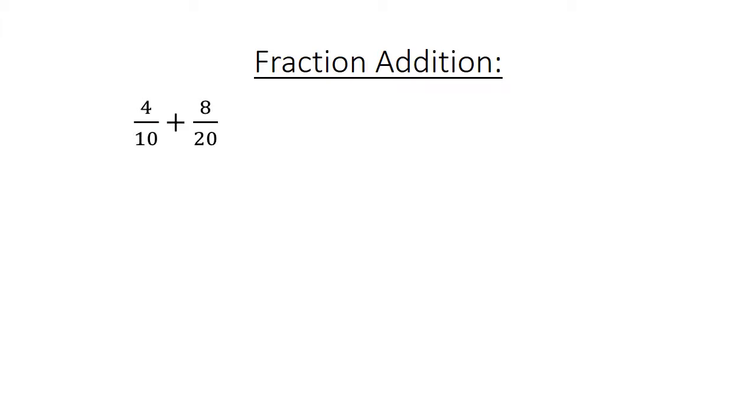Fraction addition. 4 over 10 plus 8 over 20. Find the lowest common multiple: 20. 8 over 20 plus 8 over 20 equals 16 over 20. Simplify to 4 over 5.